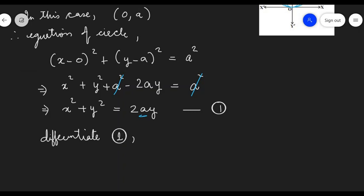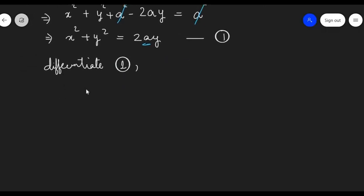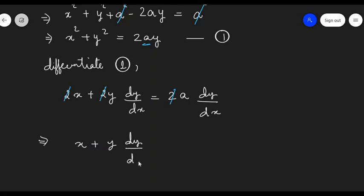When we differentiate 1, we get 2x + 2y(dy/dx) = 2a(dy/dx). Since we have 2 in each of the terms, we can cancel this 2 and we can get x + y(dy/dx) = a(dy/dx).